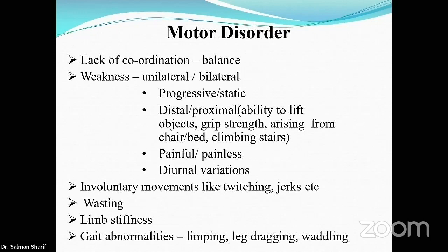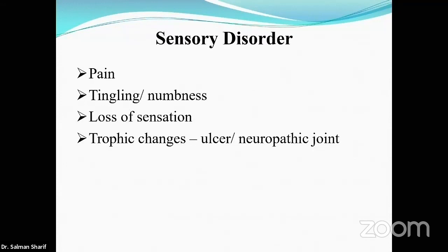Motor disorders can present in a variety of ways — lack of coordination, balance problems, or weakness, which may be unilateral or bilateral, progressive or static. It's important to determine if the weakness is proximal or distal, painful or painless. Also assess for involuntary movements (e.g., twitching or jerks in motor neuron disease), wasting, stiffness, and gait — gait is one of the most important and commonly overlooked aspects.